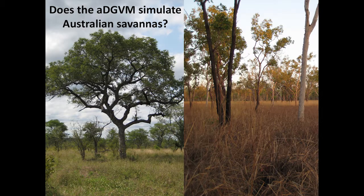We then tried to use this model, parameterized and designed for African savannahs, to simulate eucalyptus savannahs in Northern Australia. What we essentially found is that it didn't really work. The model was parameterized for Africa, and although we had some biomass and some savannahs, we weren't really able to simulate the distribution of savannahs with the ADGVM model parameterized for African savannahs.